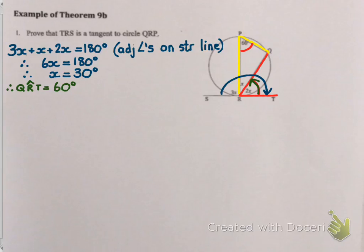Because I've just shown that my angle between my line and my chord equals my angle in my alternate segment. Which is exactly what 9b said we had to prove. So I can conclude that TRS is a tangent. And the easiest reason for me is converse of tan chord theorem.